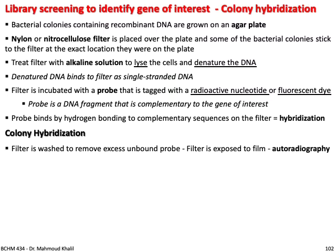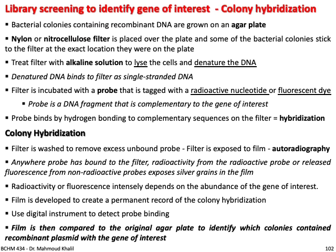The filter is washed to remove excess unbound probe, then exposed to film via autoradiography if using radioactive nucleotides. Where the probe has bound to the filter, it indicates the probe found its complementary sequence. Since you designed the probe, you know its sequence. Once bound, the signal appears on the film as radioactivity or fluorescence. Signal intensity depends on the abundance of the gene of interest. The film is developed to create a permanent record. Digital instruments can also detect probe binding. The film is then compared with the original agar plate to identify which colony contains the recombinant plasmid with the gene of interest.